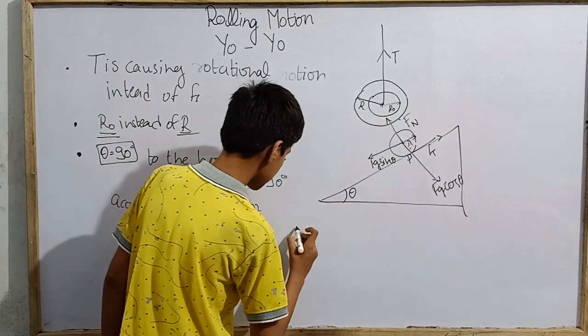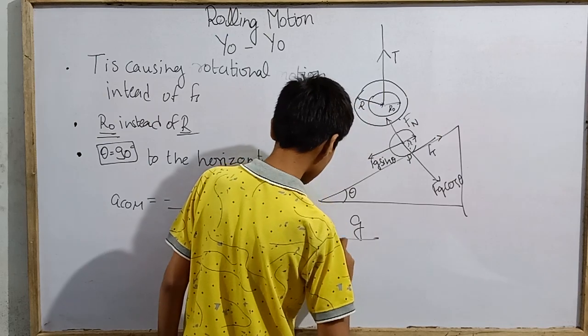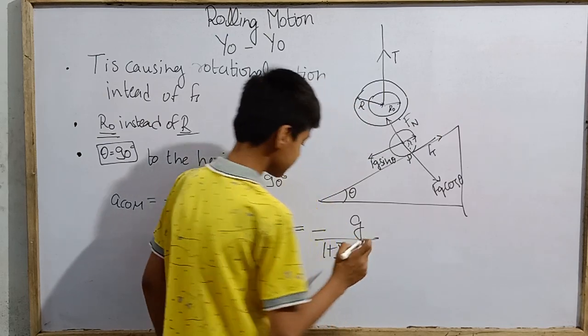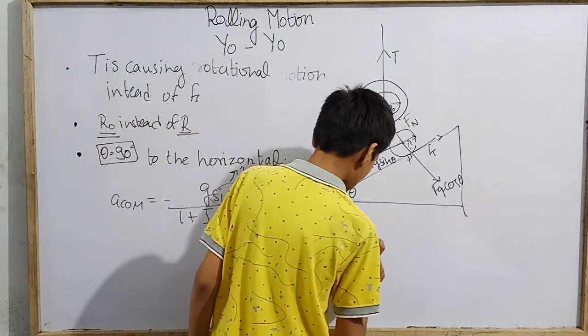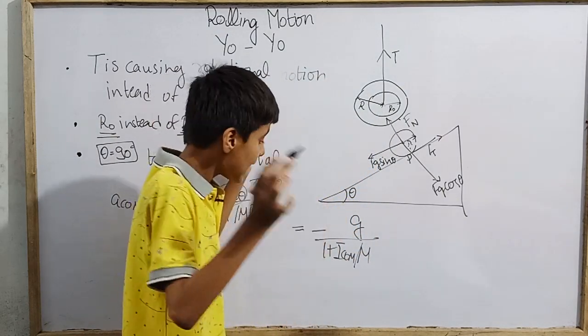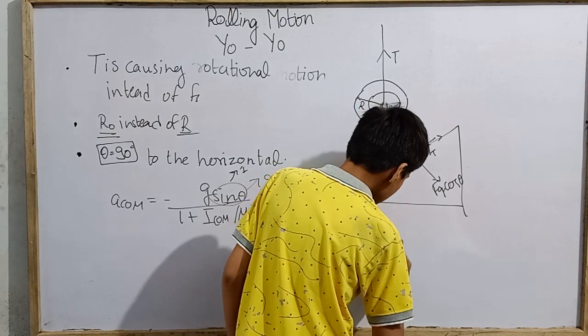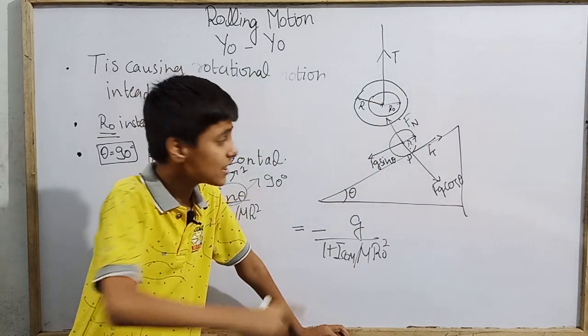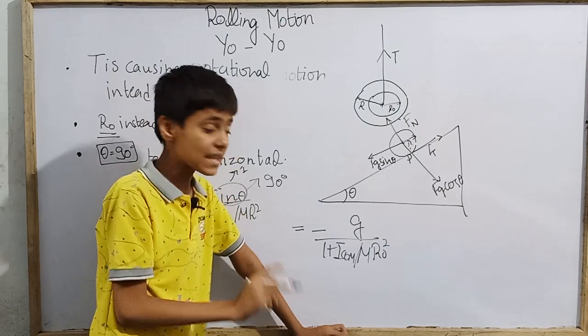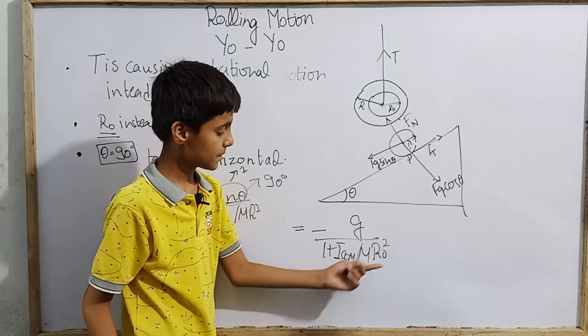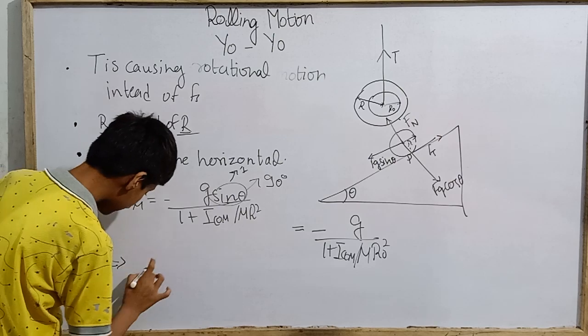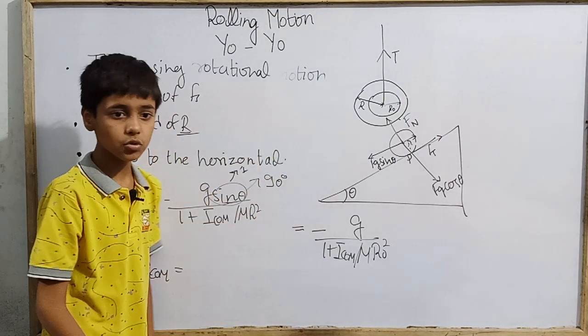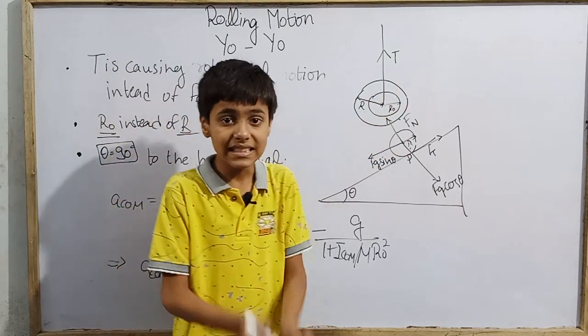Then I try for sine of 90, meaning 1, so this is just minus g by 1 plus I_COM, which means the rotational inertia of the yoyo about its center of mass, by m capital M, which means the entire mass, and here is r0 square because this is about this rotational motion. So m r0 square. This is really what was required here. So acceleration of center of mass, remember this is not acceleration of yoyo.